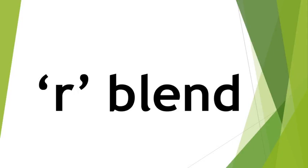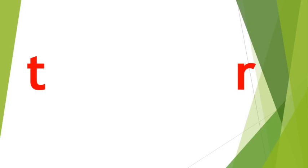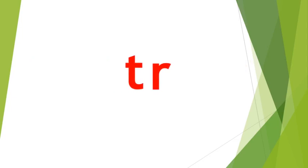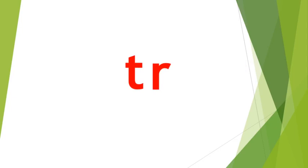Let's learn the R blend. You can see letter T and letter R on the screen separately. T says T and R says R, but when they are joined together, they make the sound TR. They make the sound TR, which is a blend.